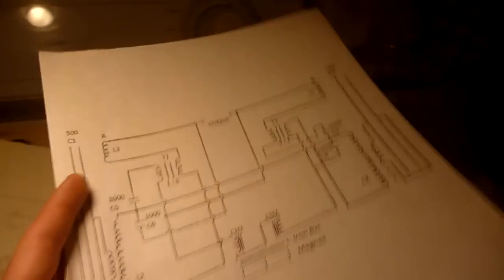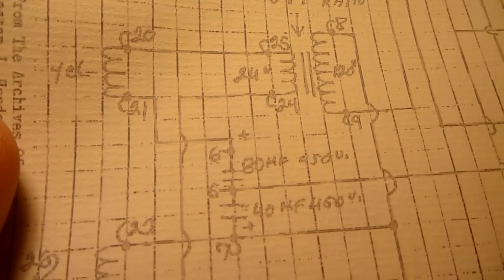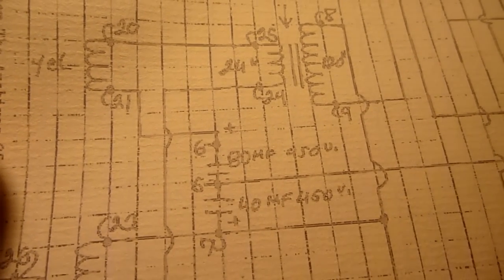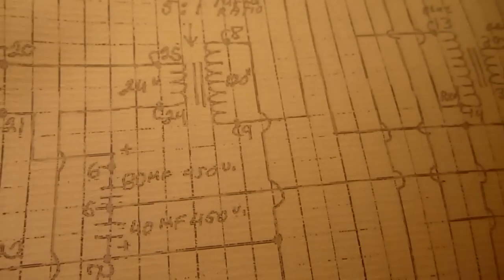But on Hendershot's original schematic, it calls for very tiny capacitance capacitors—80 microfarads and 40 microfarads.